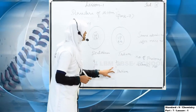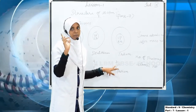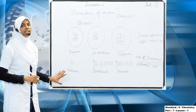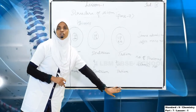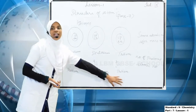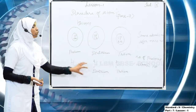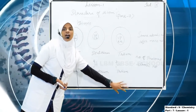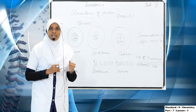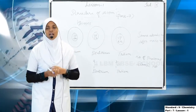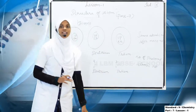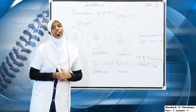The third one has atomic number one and mass number three — that is called tritium. So these are the three isotopes of hydrogen: protium, deuterium, and tritium. Atoms of the same element having the same atomic number but different mass numbers are called isotopes.